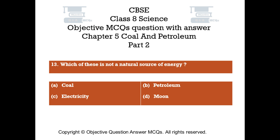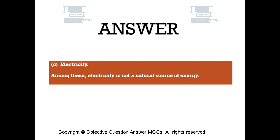Question number 13: Which of these is not a natural source of energy? Option A: Coal. Option B: Petroleum. Option C: Electricity. Option D: Moon. The right answer is Option C: Electricity. Among these, electricity is not a natural source of energy.